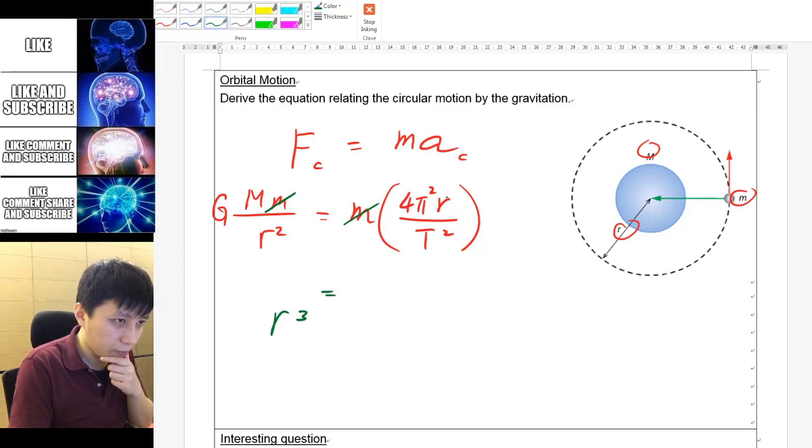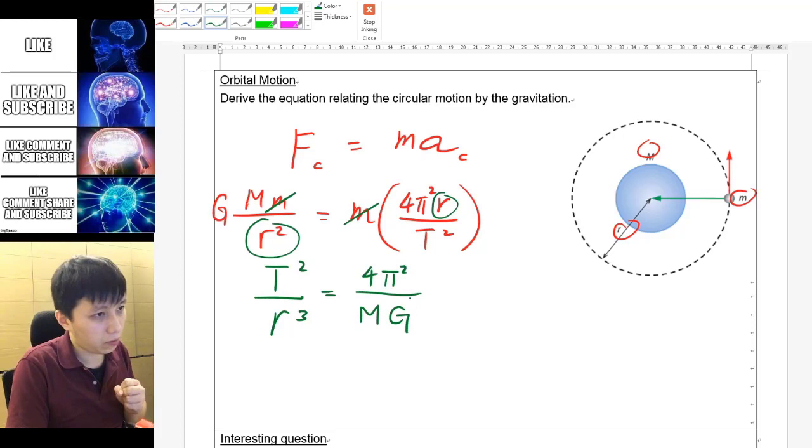And then you can move the T squared on the other side, and then keep the rest on the other side. So that's going to be 4 pi squared over the big M and over the big G as well. Yeah, I think that's all.